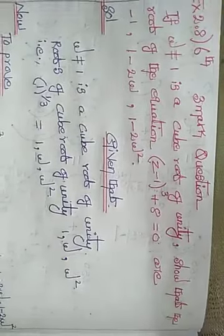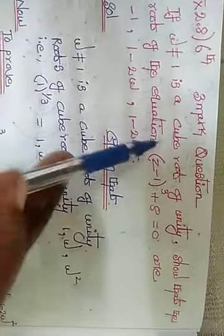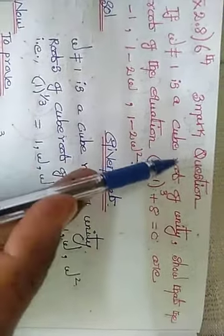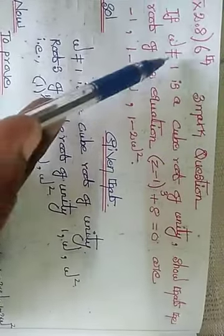Good morning, students. Now we are going to exercise 2.8, 6th sum — a 3-mark sum. What is the question?